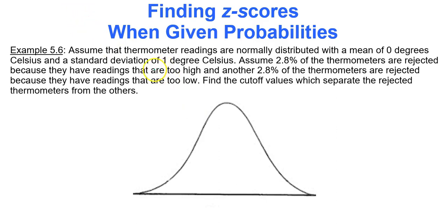Assume that thermometer readings are normally distributed with the mean of 0 and a standard deviation of 1 degree Celsius. Assume 2.8% of thermometers are rejected because they have readings that are too high, and there's another 2.8% of the thermometers rejected because their readings are too low. So these are thermometers that are terrible at reading the temperature. We need to throw them out. Quality control stepping in here. Find the cutoff values which separate the rejected thermometers from the others.